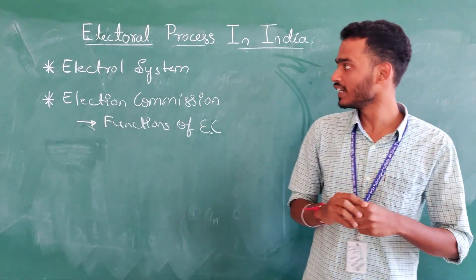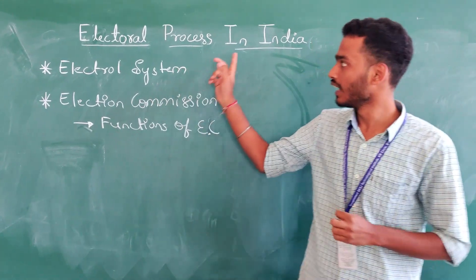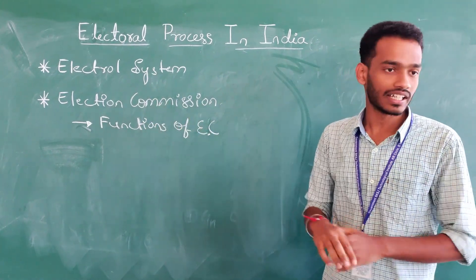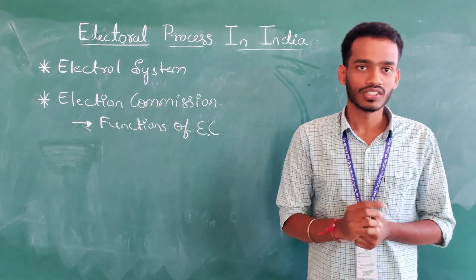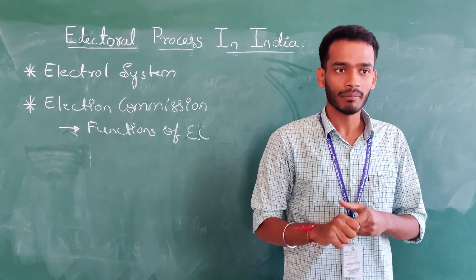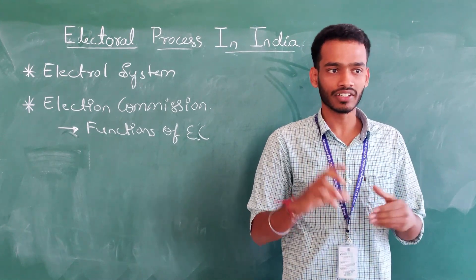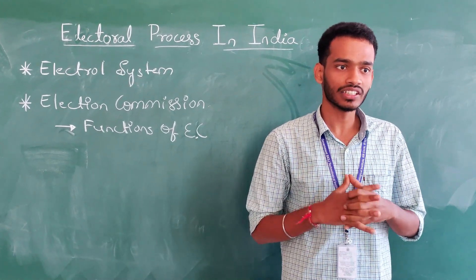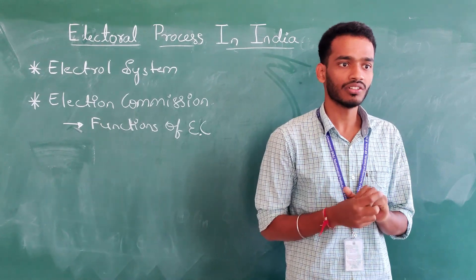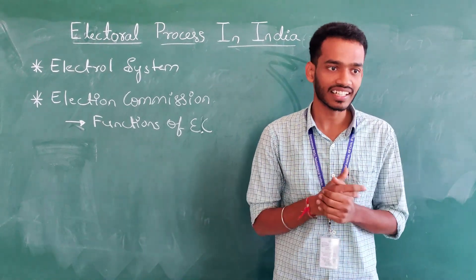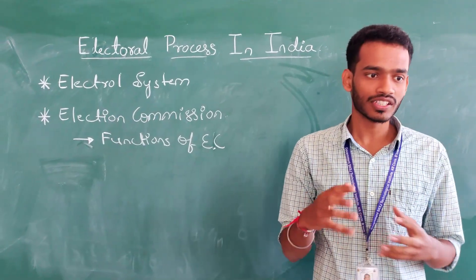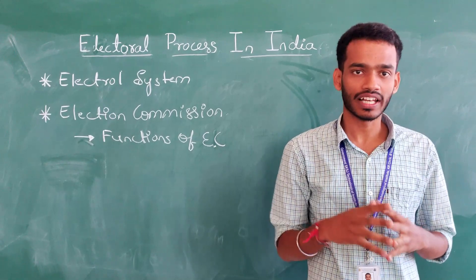First, we need to go through two terms in the electoral process. One is the electoral system and second is the election commission. The electoral system, also known as the voting system, is a set of rules and regulations that determines elections and is used in politics to elect the government.